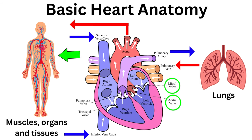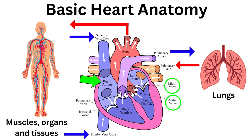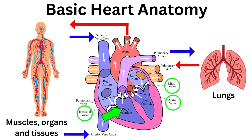After the oxygen is absorbed by the body, the deoxygenated blood travels back through the veins, eventually through the superior and inferior vena cava into the right atrium of the heart, where the tricuspid valve allows the blood to pass into the right ventricle, before it is then pumped through the pulmonary valve into the pulmonary artery back to the lungs to collect oxygen again.